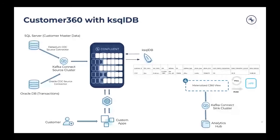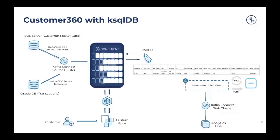Once we stitch all the information from both SQL Server and Oracle DB, we create a ksqlDB materialized view — the customer 360 view. This view stitches together all the profile attributes of the customer along with transaction information, including the latest balance based on all the transactions the customer has done. The final customer 360 view contains not just singular attributes but also aggregated attributes. For example, to calculate the latest balance, you summarize all transactions, look at whether it's a deposit or withdrawal, and aggregate to get the latest balance. Any application that needs the latest balance can simply look up this customer 360 view.